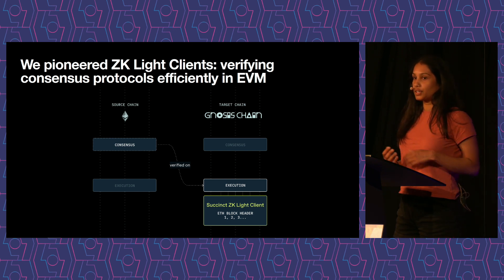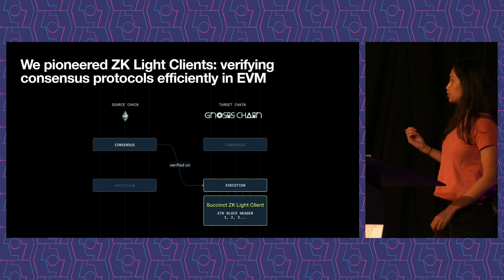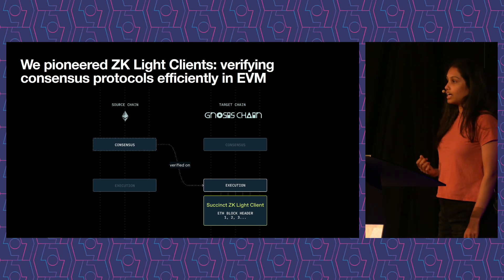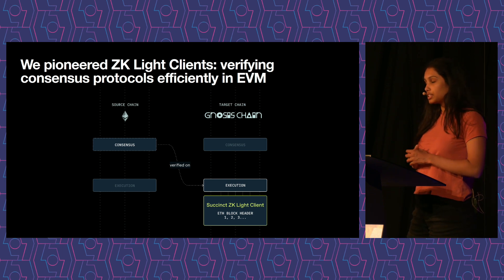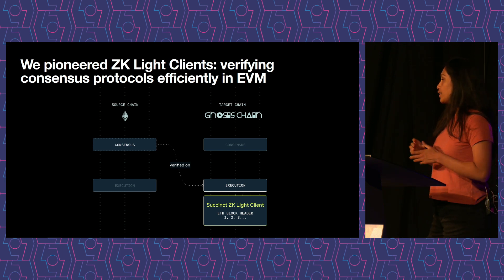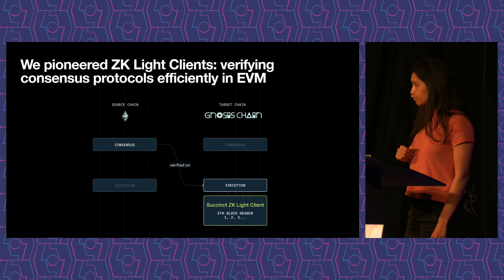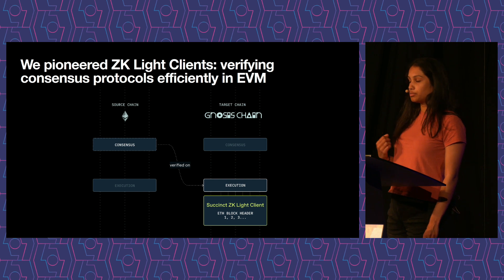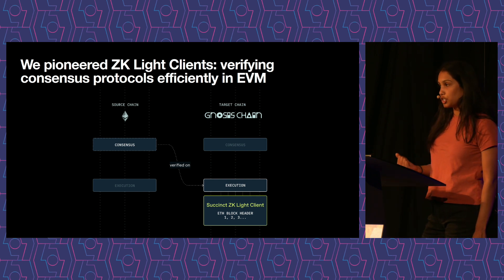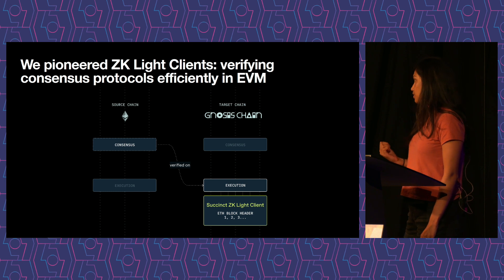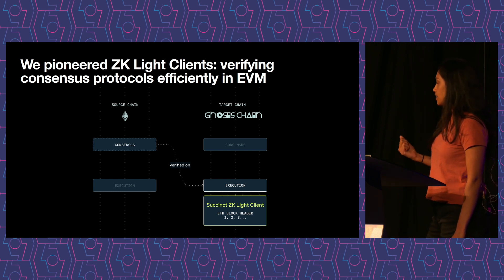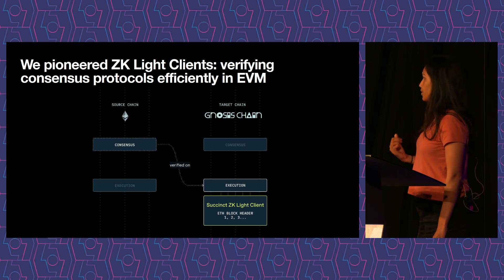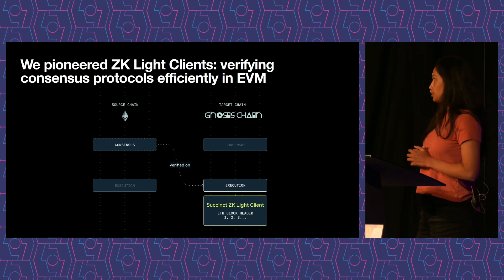If you're familiar with the current state of bridging protocols today, many of them do the same sort of thing — get Ethereum's state on another chain — but they rely on a small group of trusted actors in a multisig to sign off and attest to the Ethereum state. What we're doing is letting the other chain directly verify Ethereum's consensus natively in a very efficient way by verifying a ZK proof, so chains can talk natively to each other.